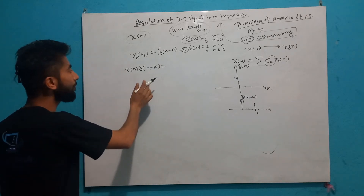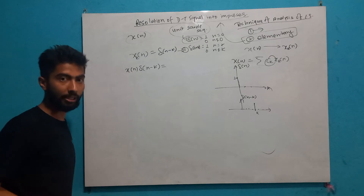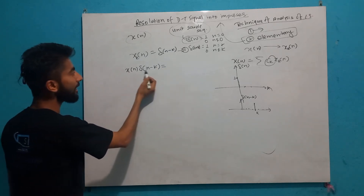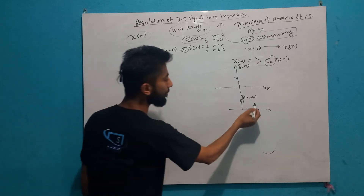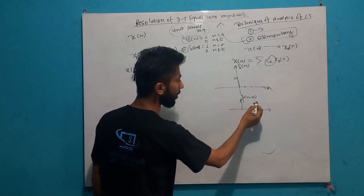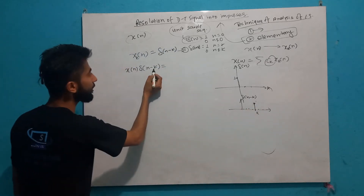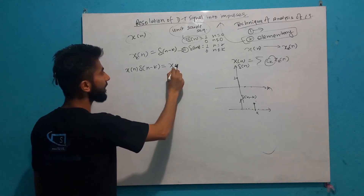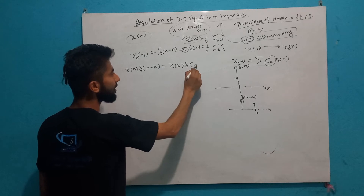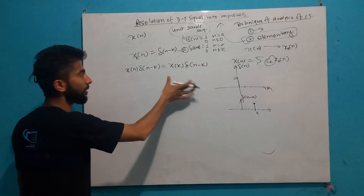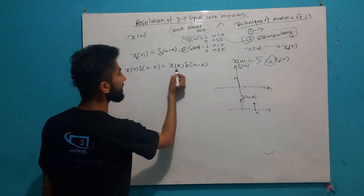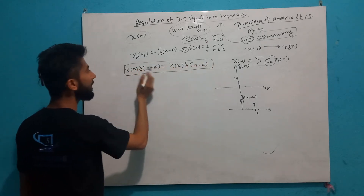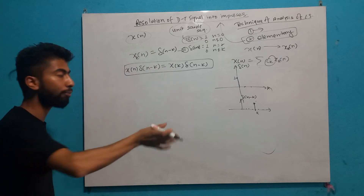If we multiply two signals, x[n]·del[n-k], what is the value of x[n]? We have to take the value of x[n]·del[n-k]. x[n]·del[n-k] is equal to 1 when n equals k, and 0 elsewhere. So x[k] is equal to 1, and substituting back: x[k]·del[n-k]. This means x[k] is equal to x[n]·del[n-k].